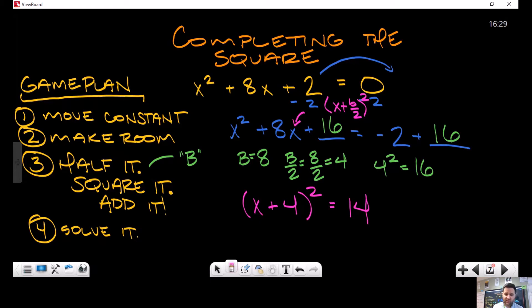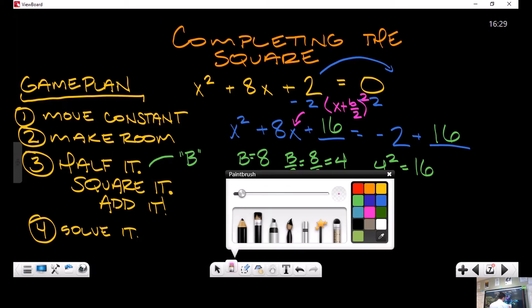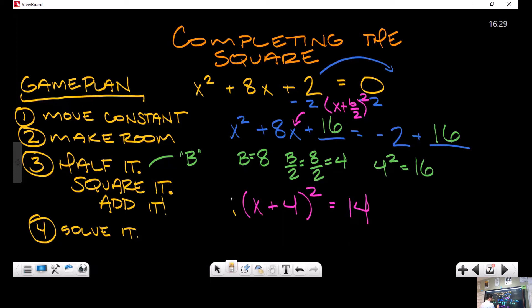This looks just like a square root problem because we have made it into a square root problem. We have created a perfect square - that is the entire point of this. We're going to take the square root of both sides. That's going to give us x + 4 equals ±√14. Radical 14 does not simplify, so my answer will be x = -4 ± √14.